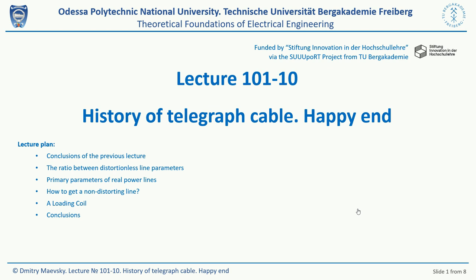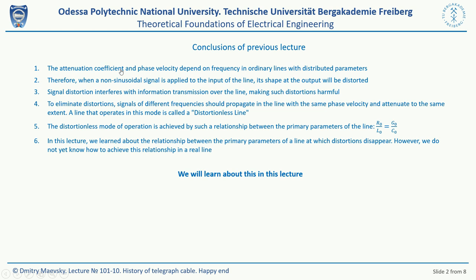Remember, we started our lectures on this section of the course with this story. But first, let's remember what was said in the previous lecture. We have learned that the attenuation factor and phase velocity in lines with distributed parameters depend on the frequency. This effect leads to waveform distortion in the lines. To eliminate distortion in the line, it is necessary to implement a mode in which the attenuation factor and phase velocity do not depend on frequency. However, in the last lecture we did not find out exactly how this ratio can be achieved.